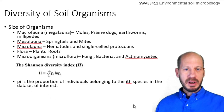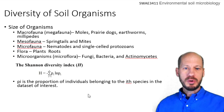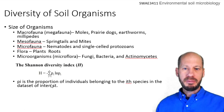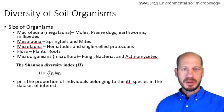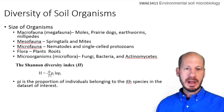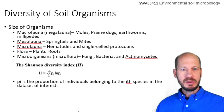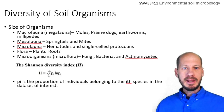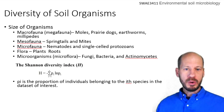The diversity of these organisms in soil is measured using different indexes. The most common is the Shannon diversity index, which is the sum of the relative proportion of each taxa multiplied by the natural logarithm of that relative proportion. The more taxa you have, the higher the Shannon diversity will be. And the more equally distributed the proportions are among the taxa, the higher the Shannon diversity will be. So the Shannon diversity integrates the number of taxa and how equally distributed populations are among the taxa present.